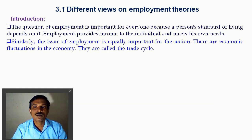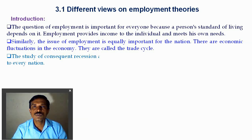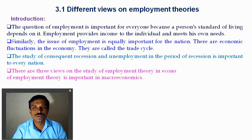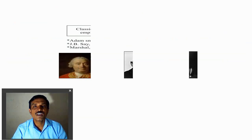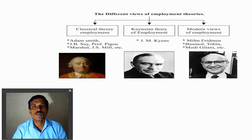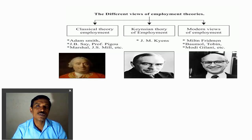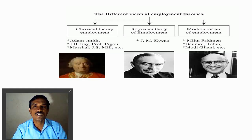The trade cycle creates some issues in the economy — issues like deflation and unemployment — and these issues are particularly studied in economics, specifically how to sort out these issues. Here are three different views about employment: the classical theory of employment, which is explained by Adam Smith, J.B. Say, Professor Pigou, Marshall, J.S. Mill, Robertson, and Fisher. Thought from Adam Smith to the Great Depression of the 1930s is called the classical thought and the classical theory.